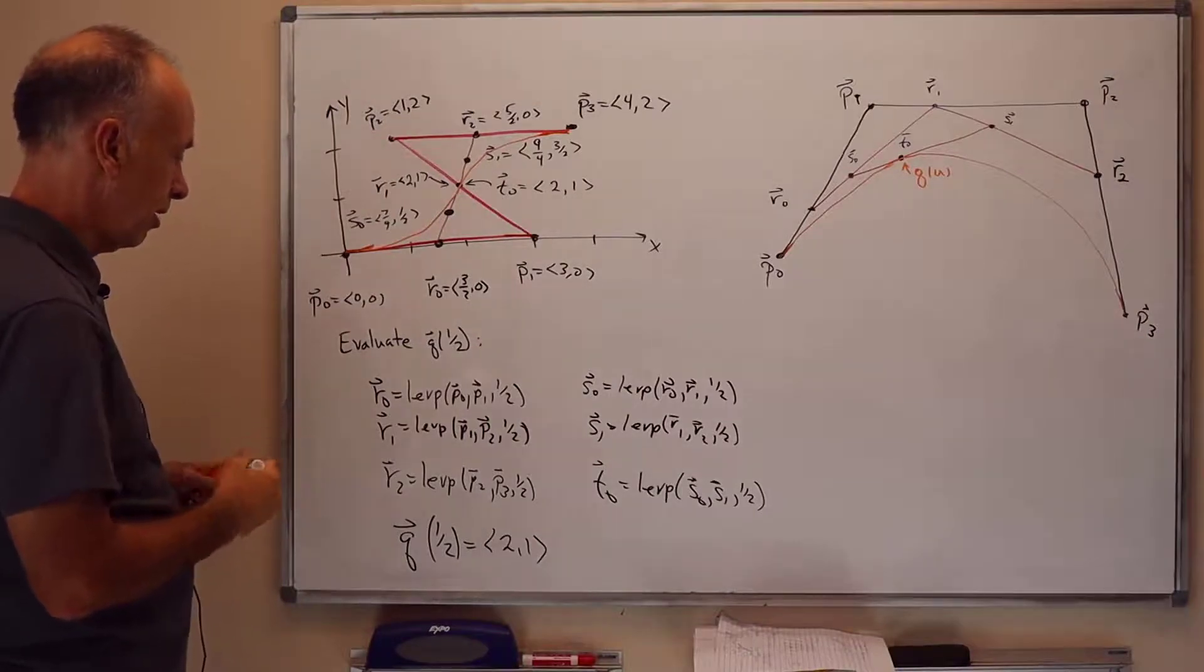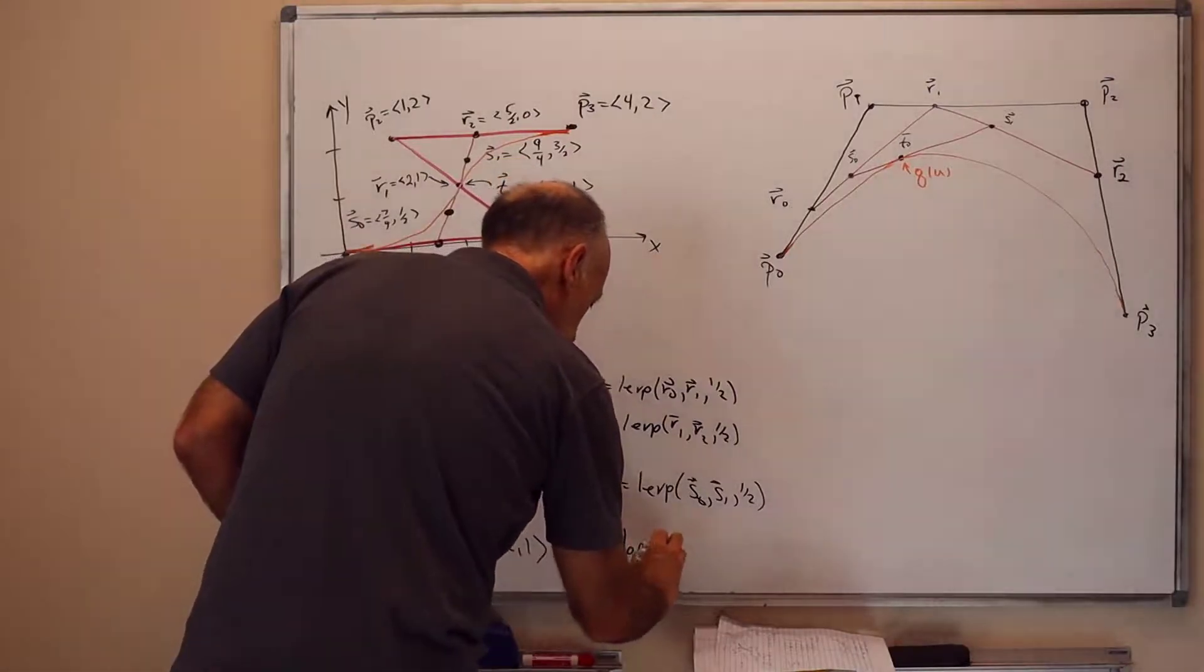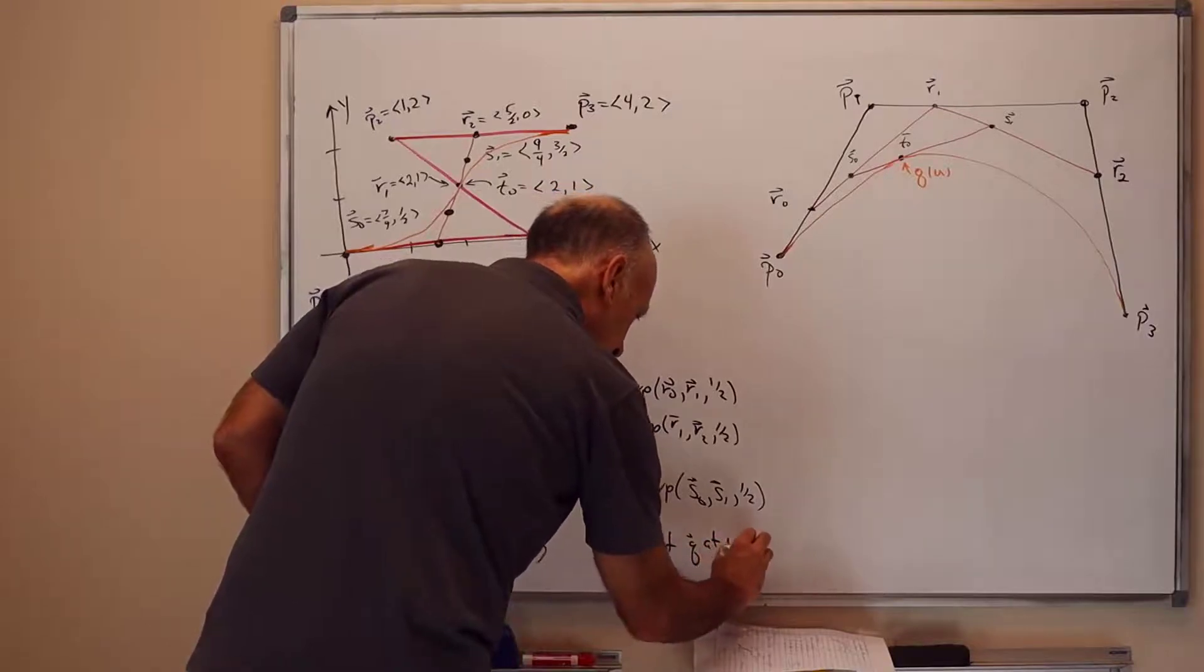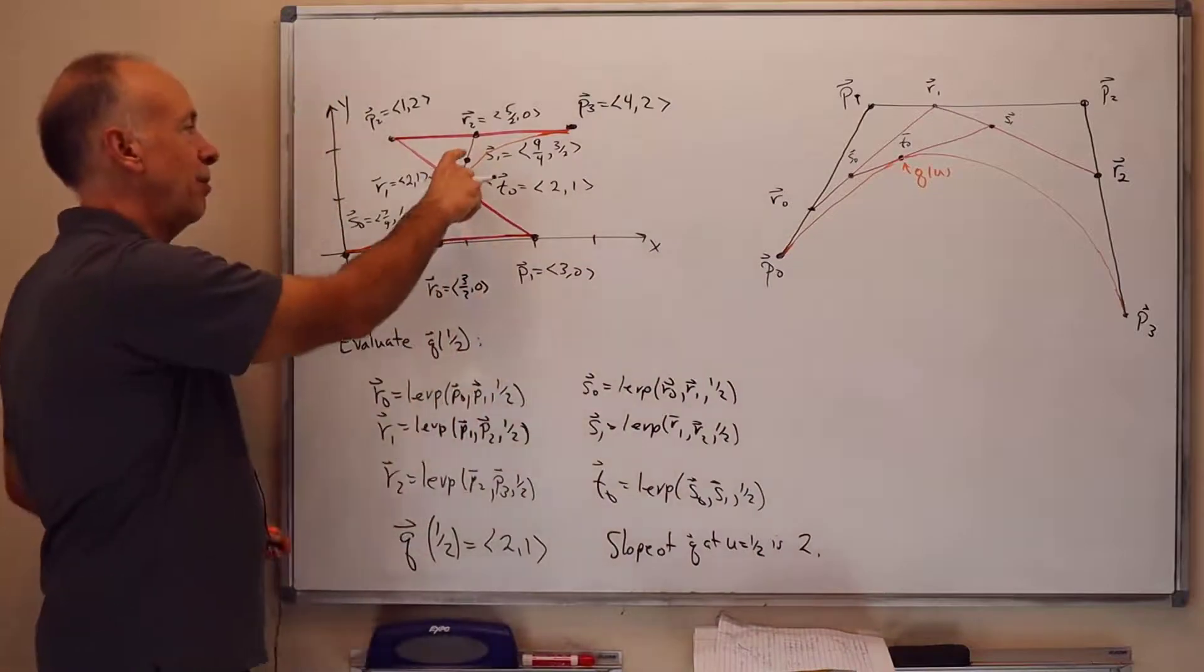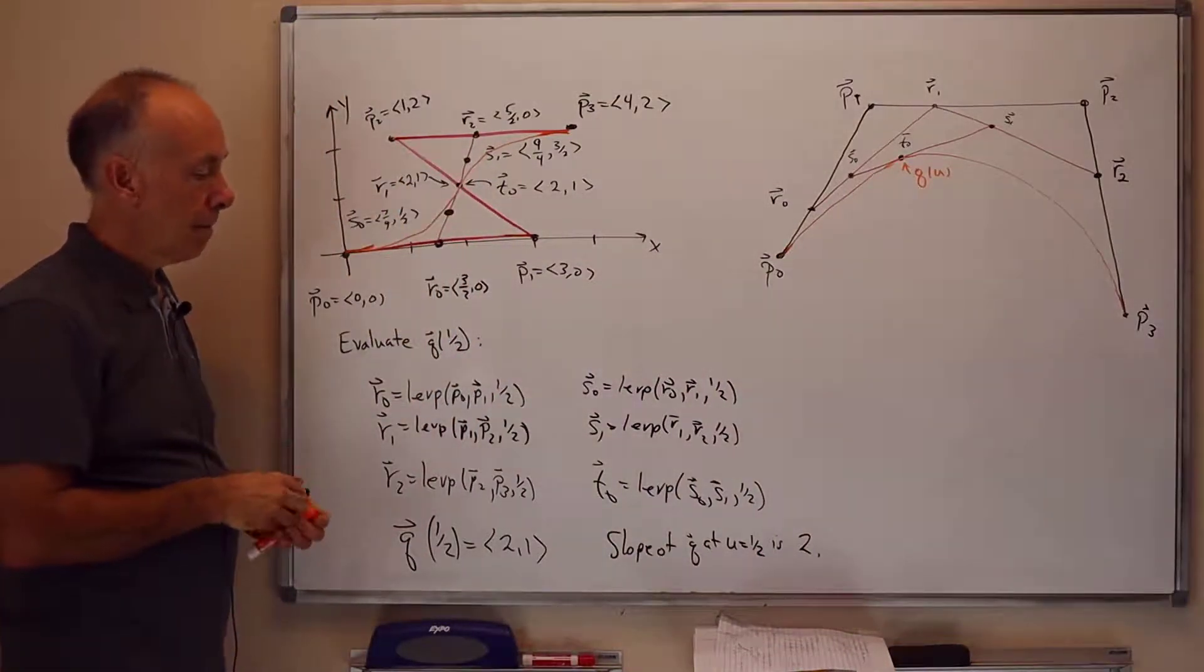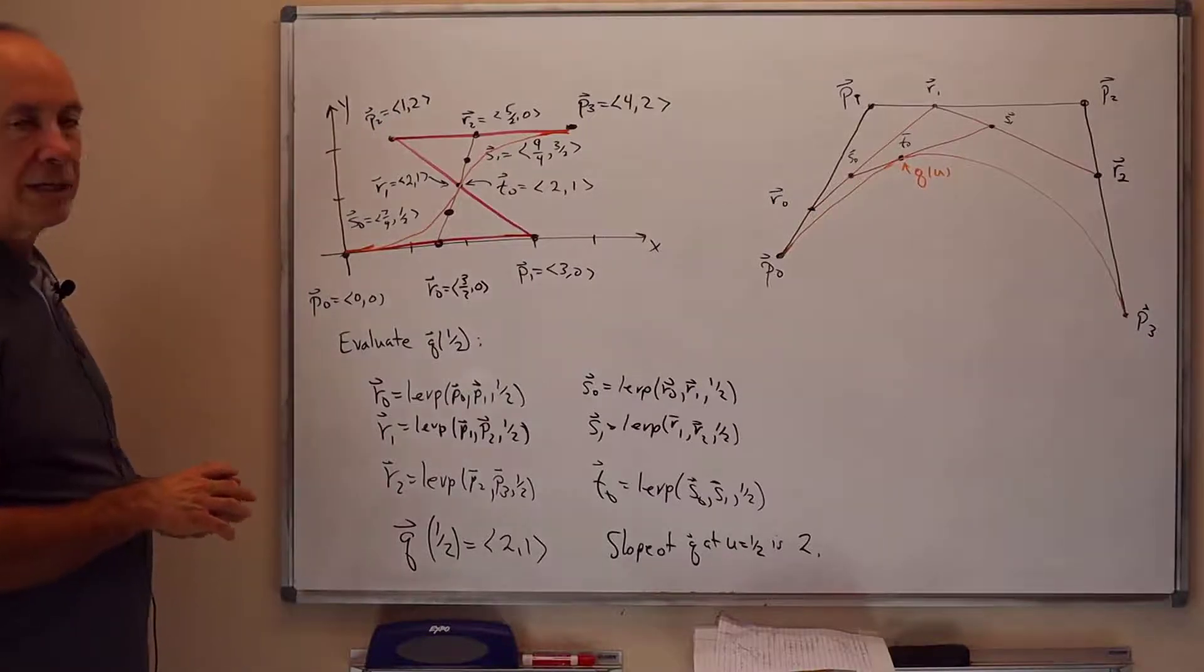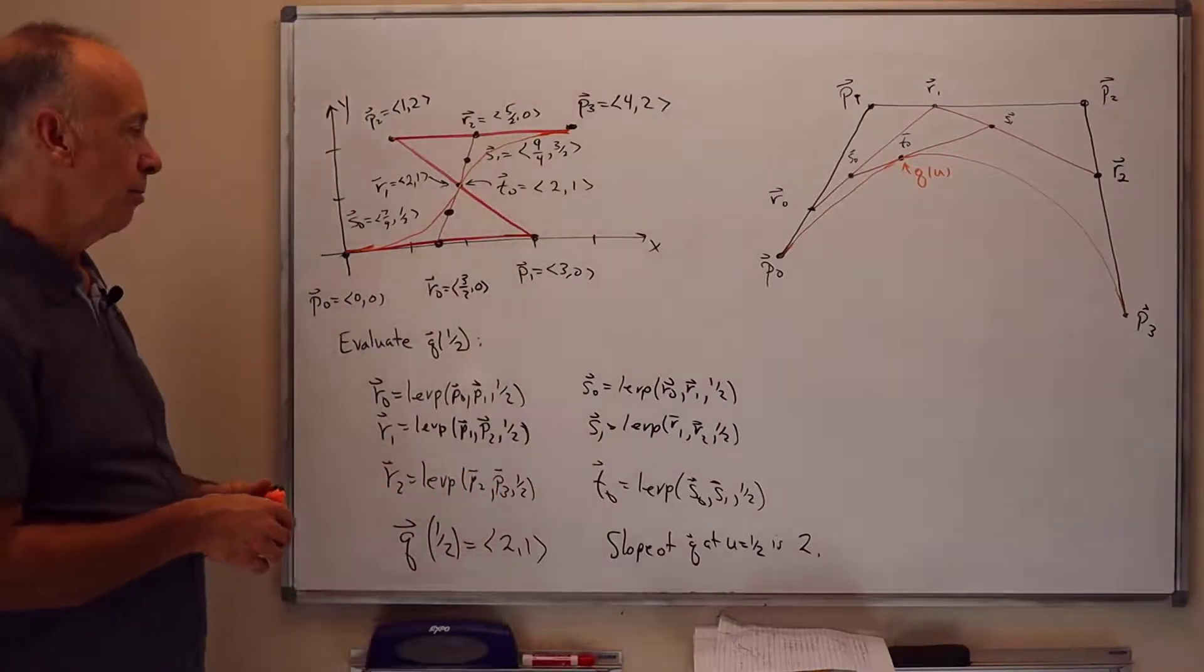So the slope of Q at U equals 1 half is in fact 2 because the slope of the line joining S0 and S1 is 2. So that's our example. I'd like to end up with a sketch of the proof of part A of the theorem from the earlier board.